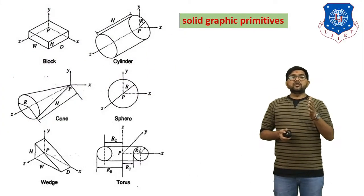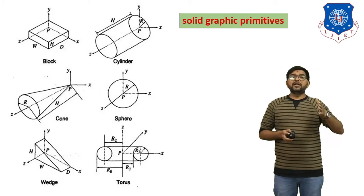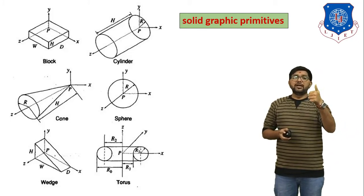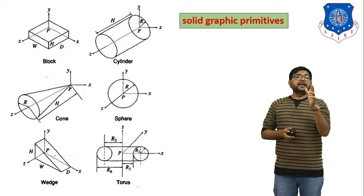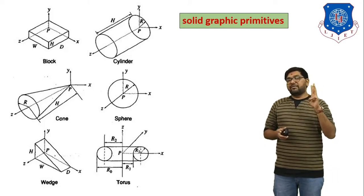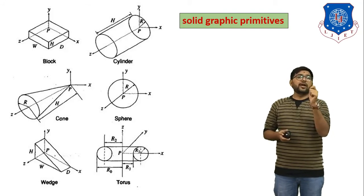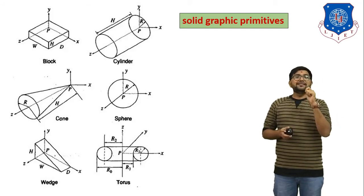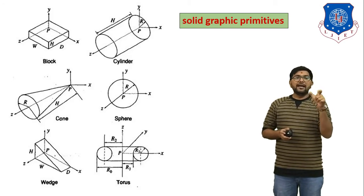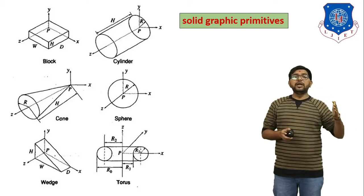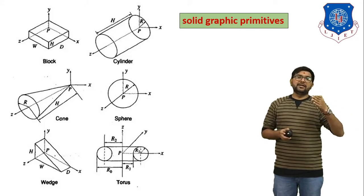These are the solid graphic primitives already available in the modeling software. The first one is a block. In a block there are three axes: x, y, and z. If you want to generate a block, you have to give input data — height of the block, depth of the block, and width of the block. That means you have to give values of w, d, and h — width, depth, and height.